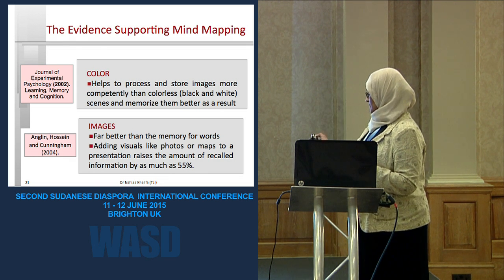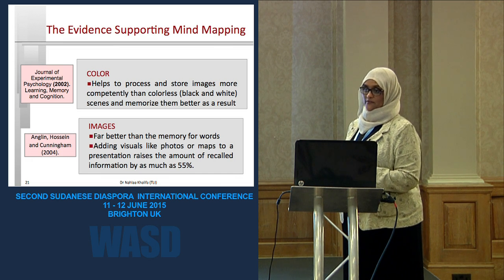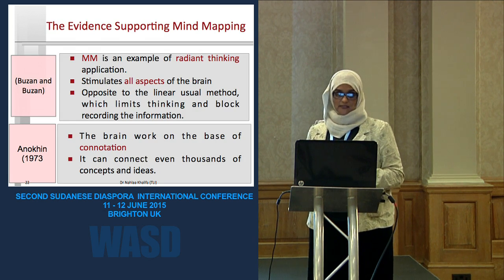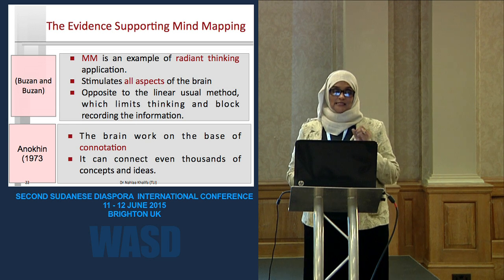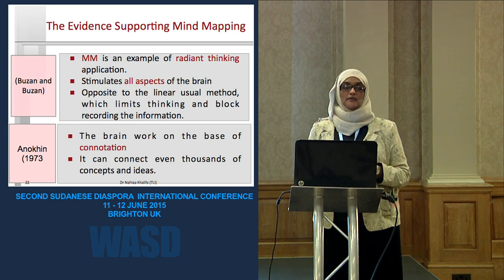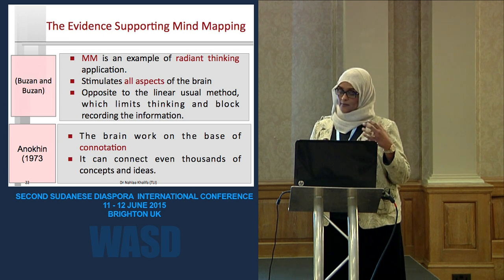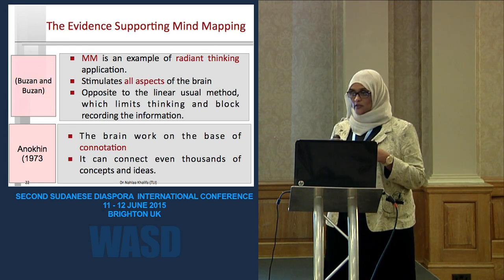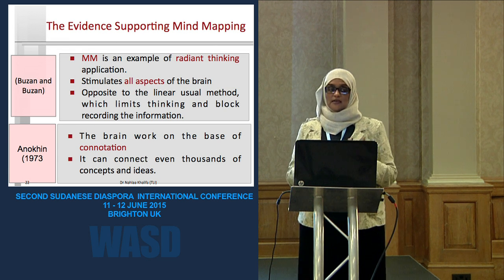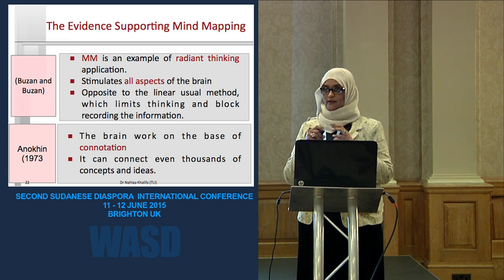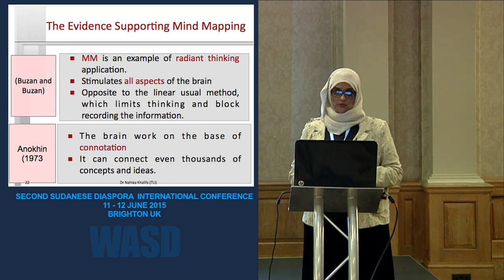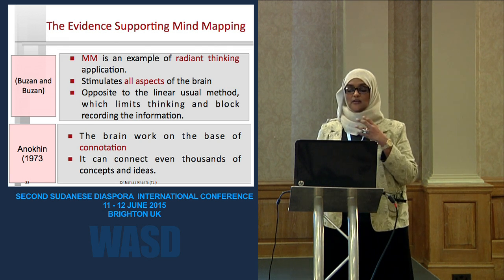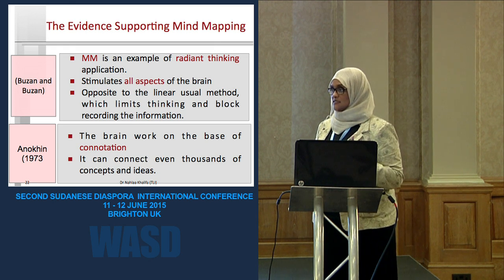For example, if I close a text slide after a while, you cannot remember all the things mentioned. But if it is pictures, you can remember a lot of information. Mind mapping is an example of what we call radiant thinking stimulation. Like our brain, it thinks in a radiant manner and stimulates all aspects of the brain. When we use mind mapping in education, it stimulates both the right and left brain for our students. The brain works on the basis of connotation — it can connect thousands of ideas at the same time.